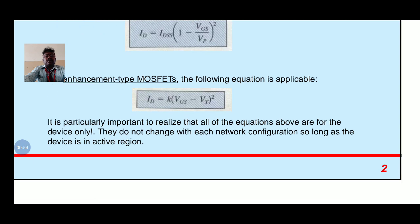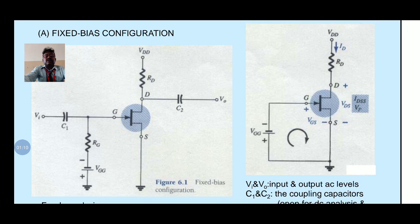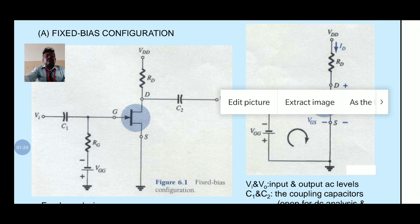It is particularly important to realize that all of the equations above are for the devices only. They do not change with each network configuration as long as the device is in the active region. There are three types of biasing configuration: fixed bias configuration, voltage to source connected self bias, and voltage divider biasing.